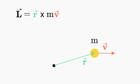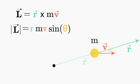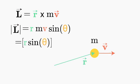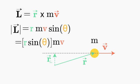Once again, we can write the magnitude of this cross product as r times mv times the sine of the theta between the two. But it's often more helpful to think about this as r times sine theta times mv. In other words, the r sine theta is the component of the position vector that's perpendicular to the direction of the momentum.